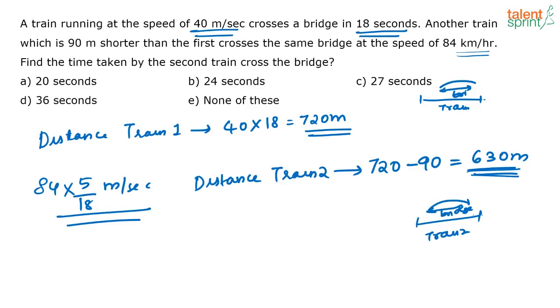Now what is the question? Find the time taken by the second train to cross the bridge. So the distance traveled by the second train is 630 meters. Its speed you know. So what is the time it will take? 630 divided by 84 into 5 by 18 means this 18 will come up. Solve for this and you will get it as 27 seconds. So the correct answer here is option C.